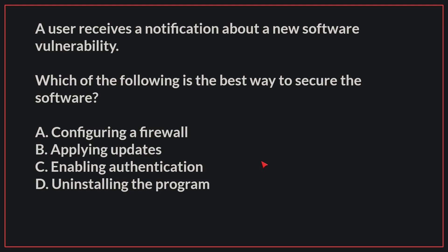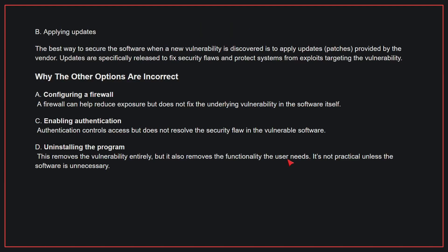A user receives a notification about a new software vulnerability. Which of the following is the best way to secure the software? The correct answer is B, applying updates. The best way to secure the software when a new vulnerability is discovered is to apply updates provided by the vendor. Updates are specifically released to fix security flaws and protect systems from exploits targeting the vulnerability.